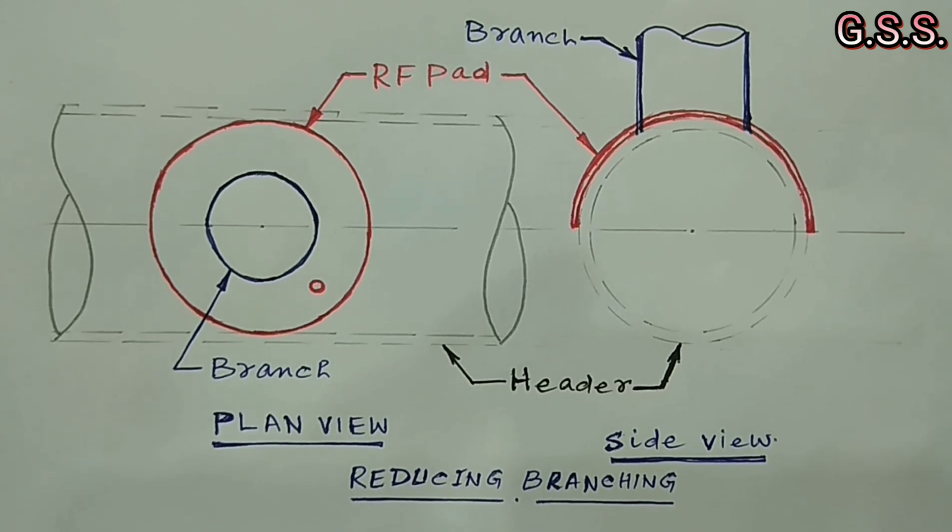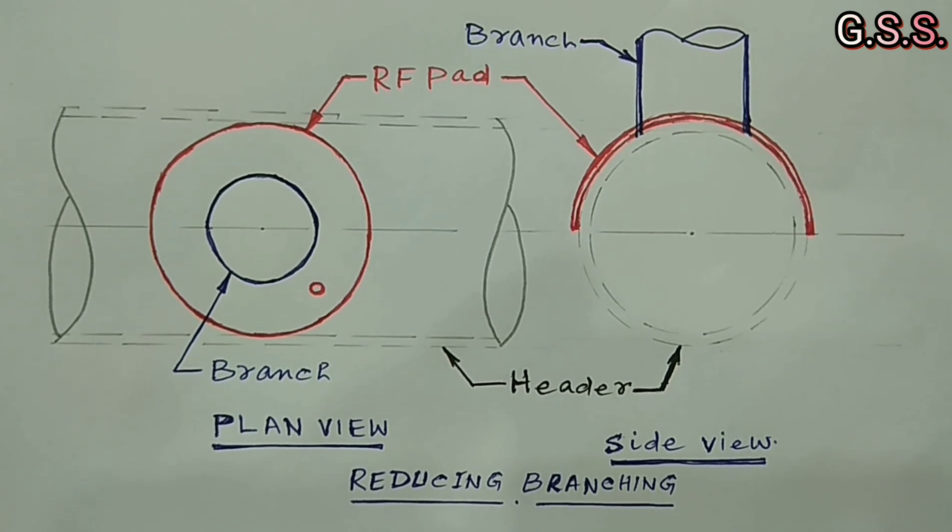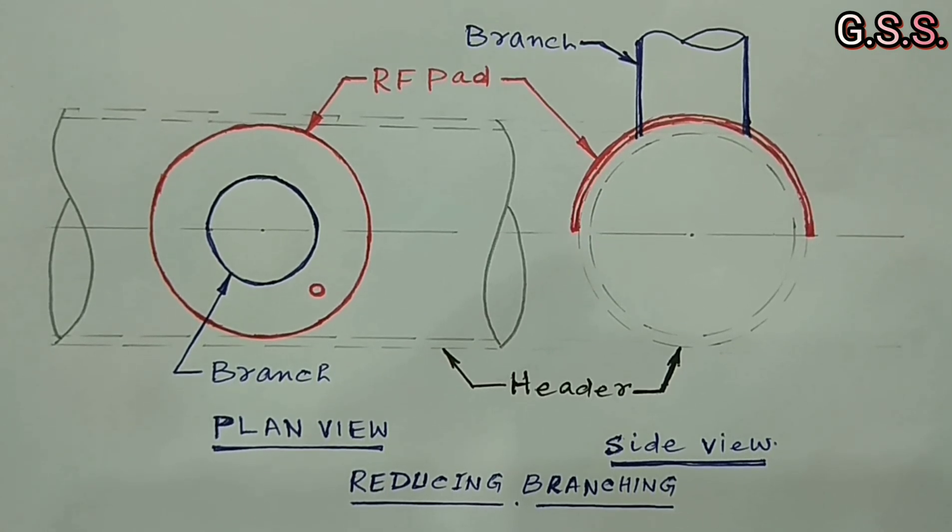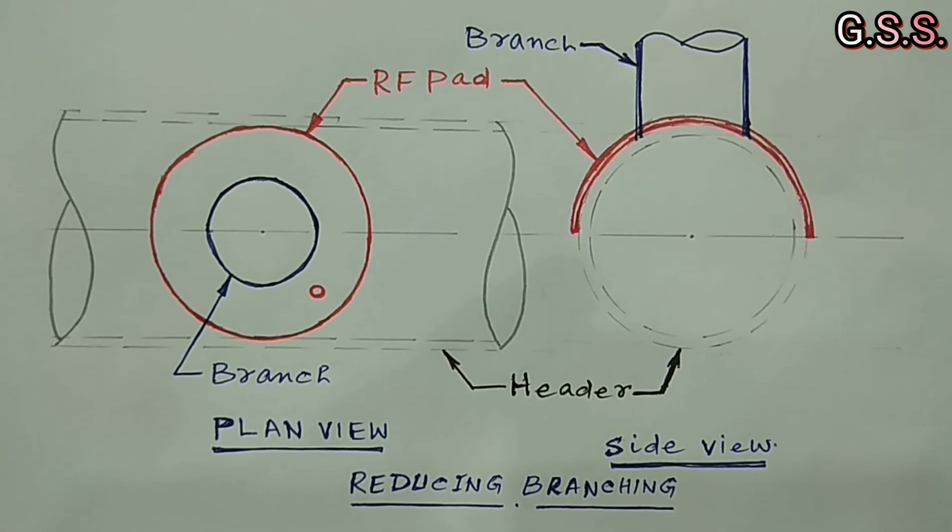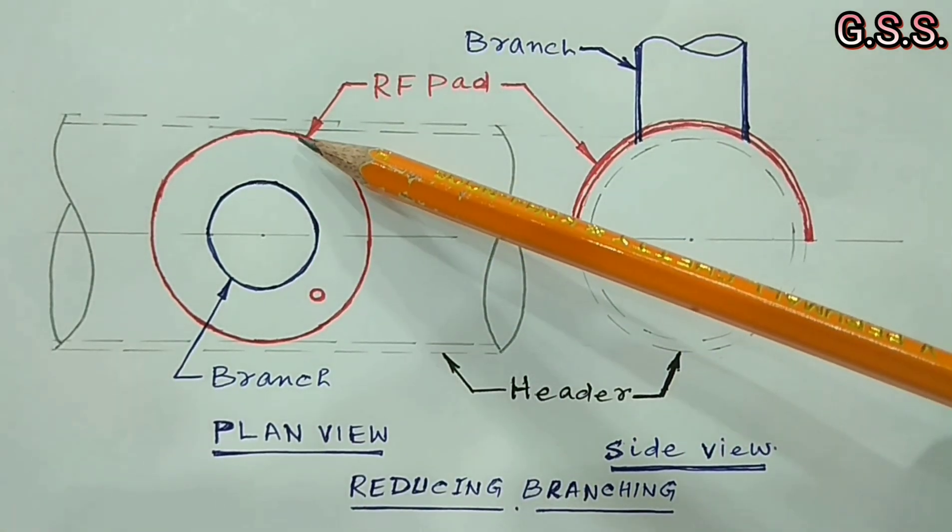For example, 16 inch by 8 inch, 16 inch by 6 inch like that. But, for branch having size above half of header size, RF pad diameter shall be more than header pipe diameter. For example, 16 inch by 12 inch branching.